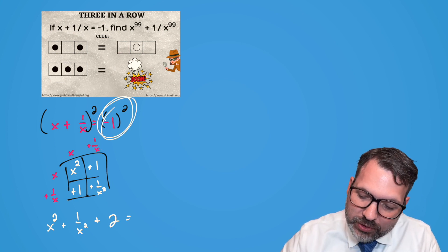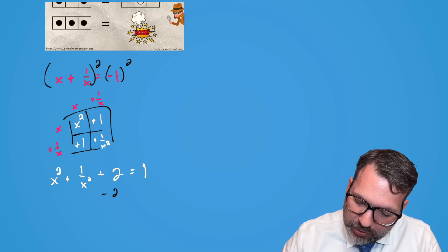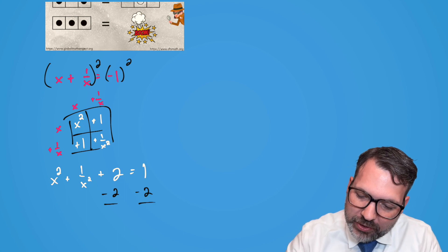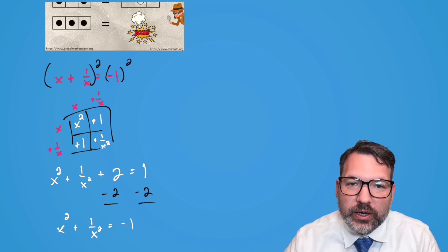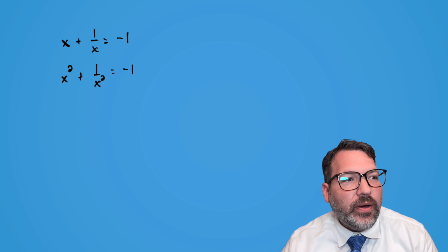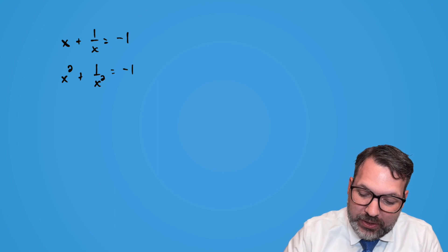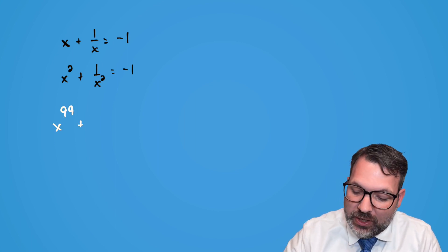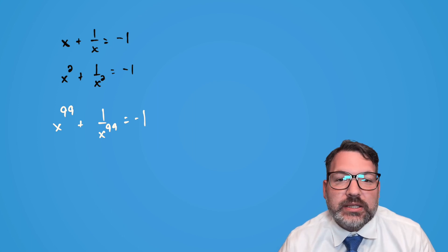This whole thing equals the square of negative one, which is positive one. Subtracting two from both sides, x² + 1/x² = -1. So we now have two pieces of information: x + 1/x = -1, and x² + 1/x² = -1. One thing we might guess at this point is that maybe every power of this number plus the same power of its reciprocal is always negative one — maybe x^99 + 1/x^99 is also negative one.